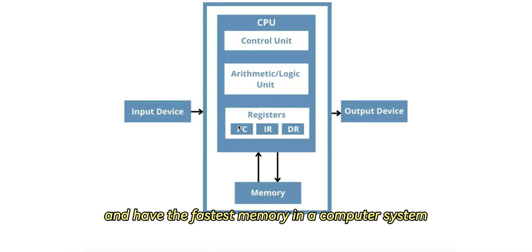Registers are inside the CPU and have the fastest memory in a computer system, as they are located inside the CPU itself. Accessing data from registers typically takes just one CPU clock cycle, which makes them ideal for operations requiring immediate access.